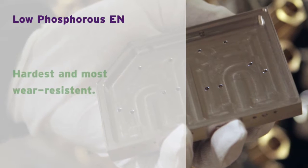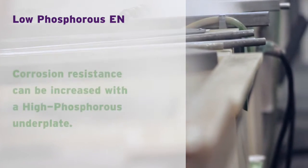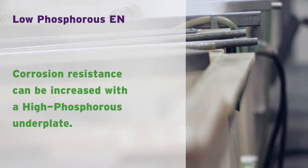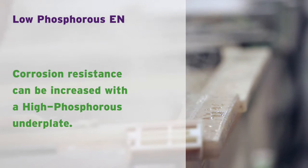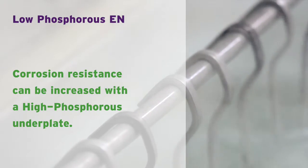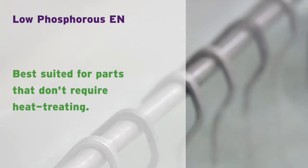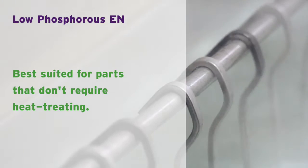Our low phosphorus finish is our hardest and most wear resistant finish. It's also our least corrosion resistant finish. However, this can be offset by combining the low phosphorus with a high phosphorus underplate, which improves corrosion resistance while retaining the surface hardness. Our low phosphorus finish is also best suited for parts that don't require heat treating.